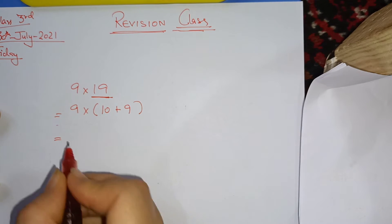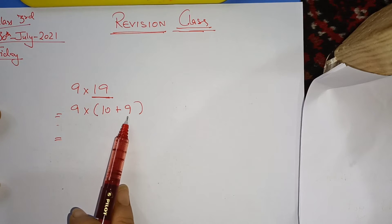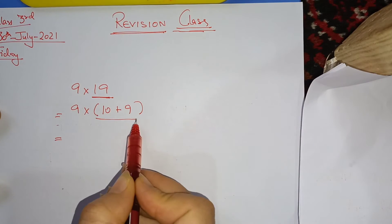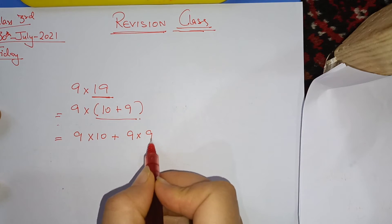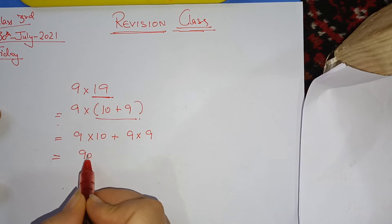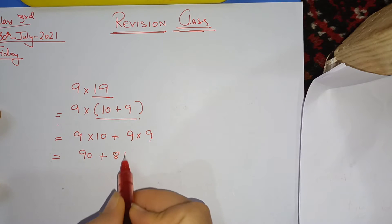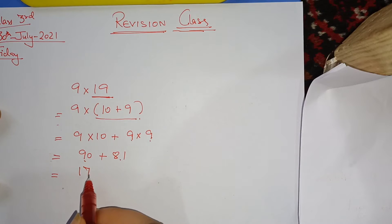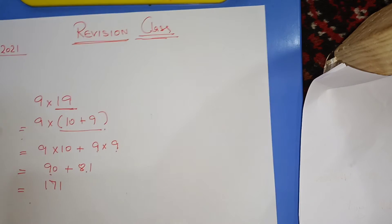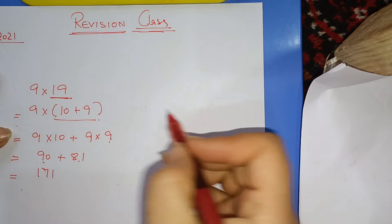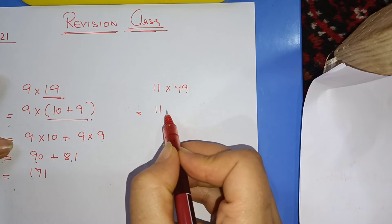So this is the next step. What will happen? You will multiply this 9 with this 10 and you will multiply this 9 with this 9. So 9 into 10 plus 9 into 9. Now 9 into 10 is 90 plus 9 into 9 is 81. And 90 and 81 if we add.